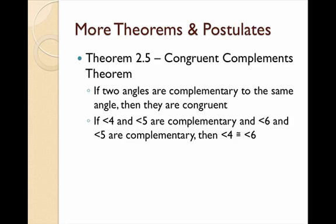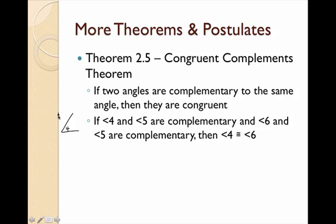We also have the Congruent Complements Theorem, which works the same way. Instead of being supplementary, if two angles are complementary to the same angle, then they are congruent to each other. For example, angle 4 and angle 5 are complementary — they add up to 90 degrees. If angle 6 is also complementary to angle 5, then angle 4 and angle 6 are congruent to each other. That's your Congruent Complements Theorem.